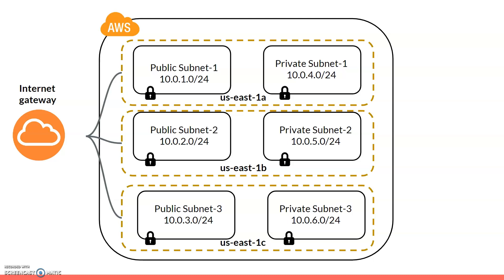The NAT gateway terminates in one public subnet, and its traffic goes through an Elastic IP. You must assign an Elastic IP to the NAT gateway, and all NAT gateway traffic passes through that Elastic IP. Both the internet gateway and NAT gateway share a similar configuration but have different sets of routing rules, which we will see in the session.